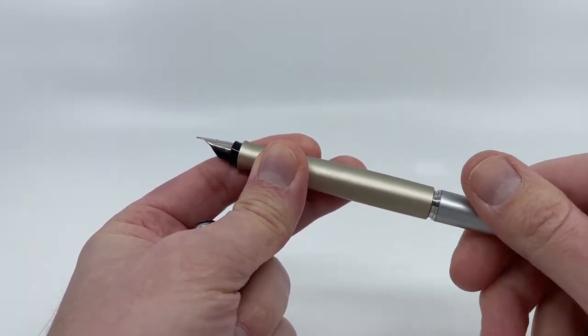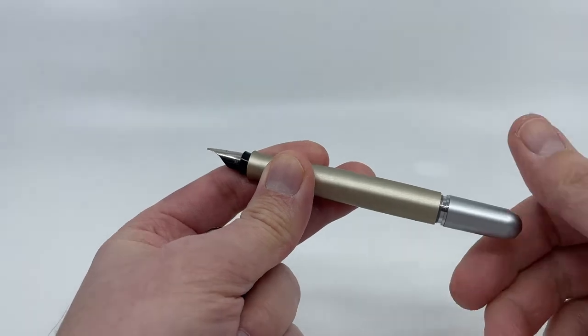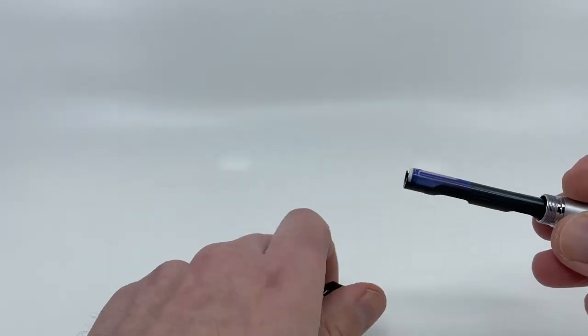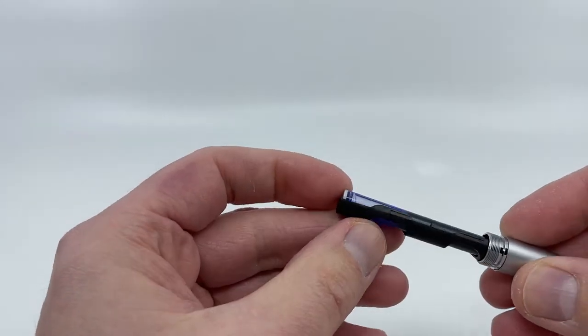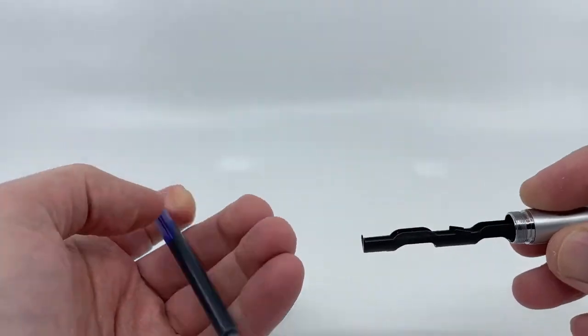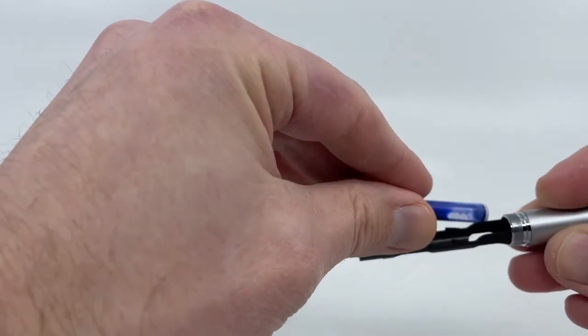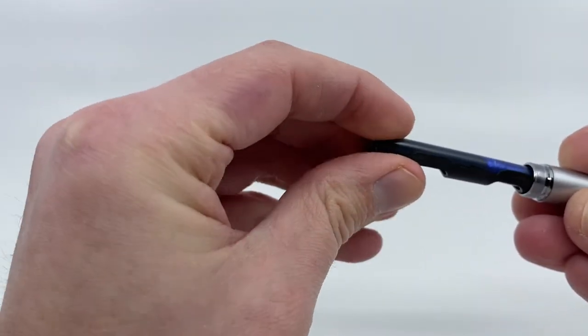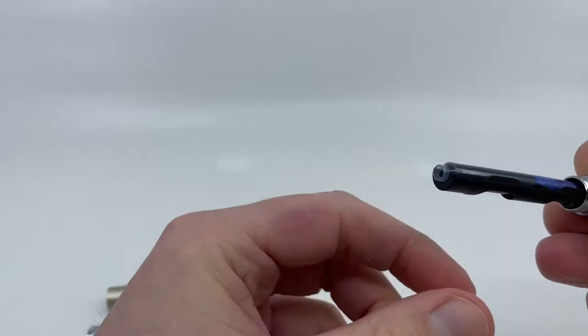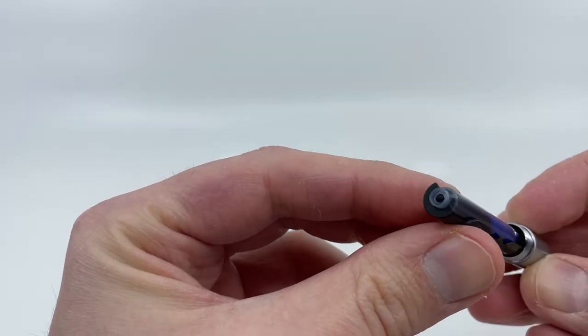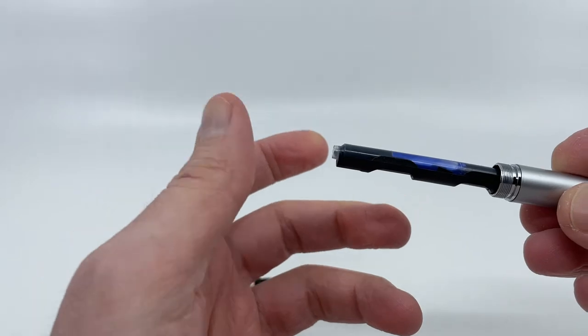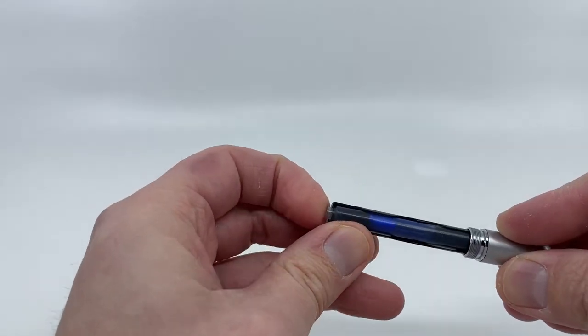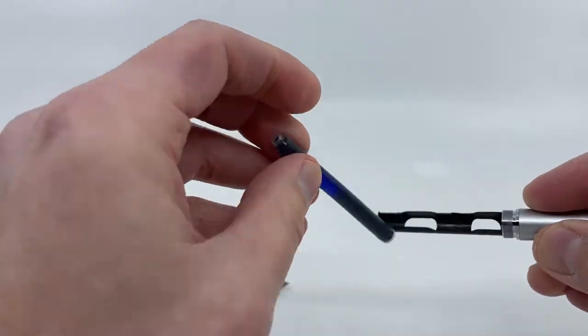You unscrew what Pelikan refers to as the handle or perhaps blind cap here in the back. As you pull it out, you see you get this cartridge tray and you can insert the cartridge properly. As you screw this back in, this will seat the cartridge. You can use one long international cartridge or two standard small cartridges kind of back to back.